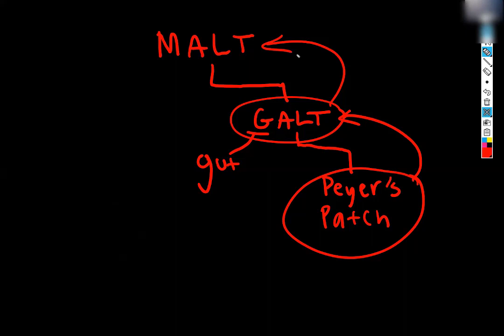So if I were going to ask about Peyer's patches specifically, I would circle the whole structure, and the question wording would say something like 'identify the specific structure circled' — that would be your cue that I'm trying to get you to name something very specific to the place on the slide we're looking at, not a general term. All right, let's go look at some slides.